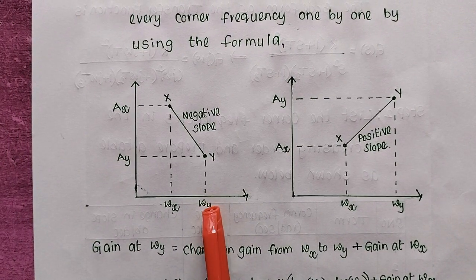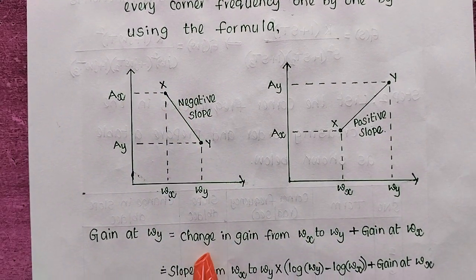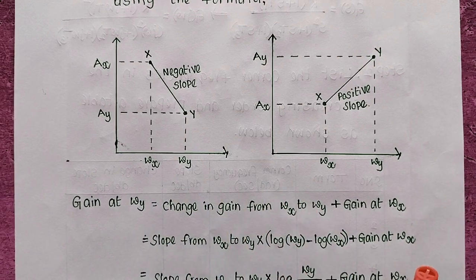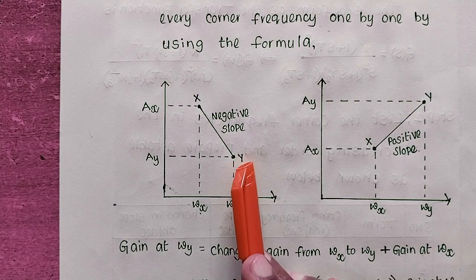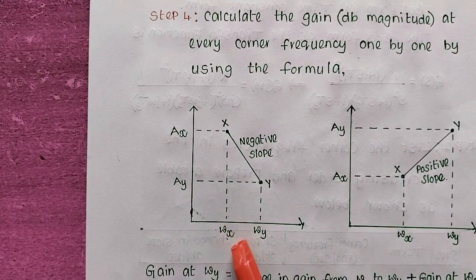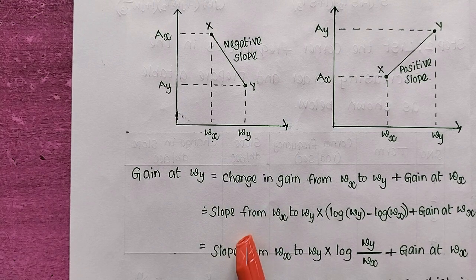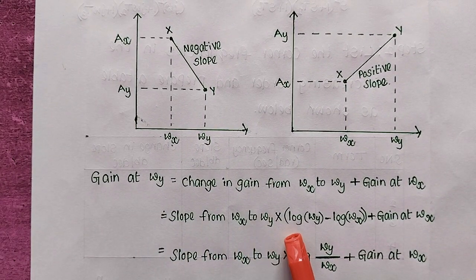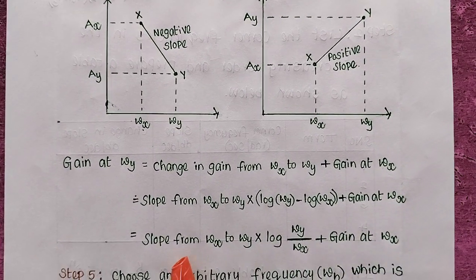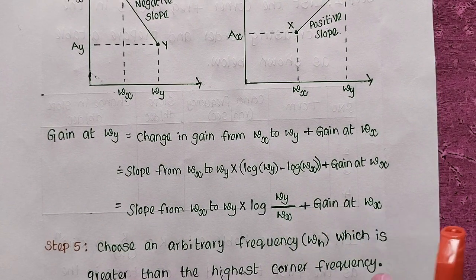The gain at ωy equals the change in gain from ωx to ωy, plus the gain at ωx. Another way: gain at ωy = slope from ωx to ωy × log(ωy/ωx) + gain at ωx. This formula is used to calculate the gain at each successive corner frequency.